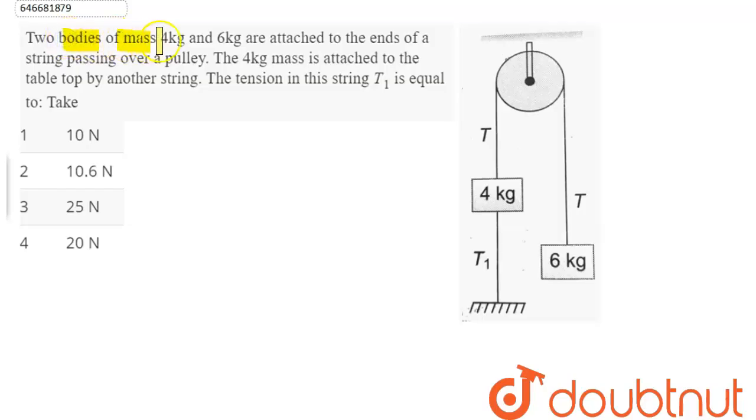Two bodies of mass 4 kg and 6 kg are attached to the ends of a string passing over a pulley. The 4 kg mass is attached to the tabletop by another string. The tension in this string T1 is equal to: